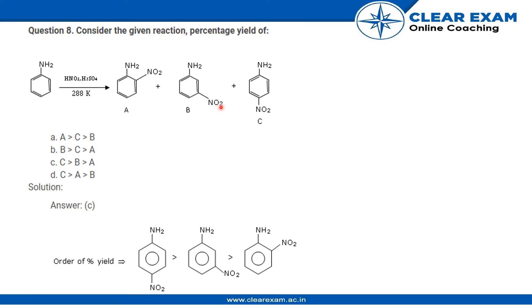Now we know that percentage yield, there will be a maximum yield of the one product that is stable. So we have to find out the order of the stability for A, B, and C.